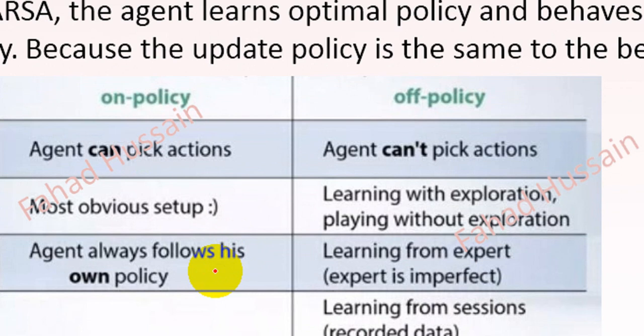On-policy means the agent can pick actions while learning; the setup is straightforward — on-policy learning includes exploration and follows the same policy throughout. Off-policy, on the other hand, can learn from recorded data or sessions from other agents, which is the off-policy approach.